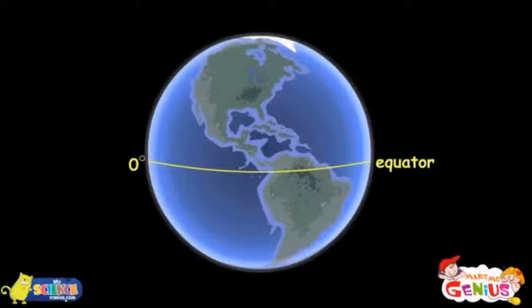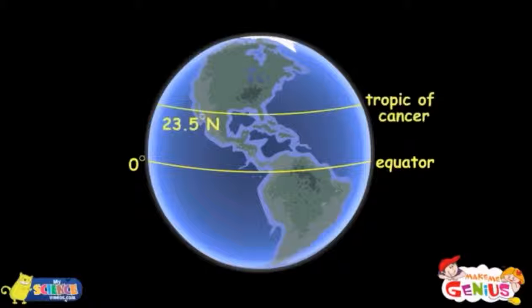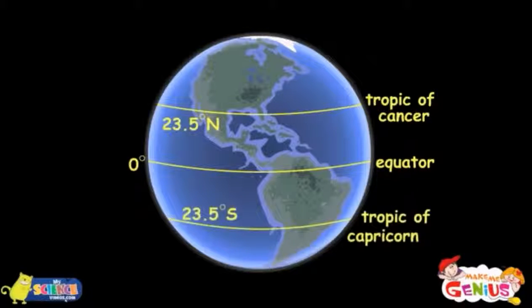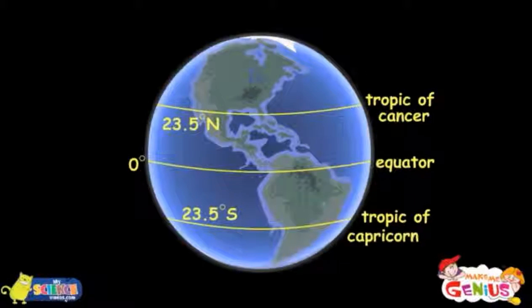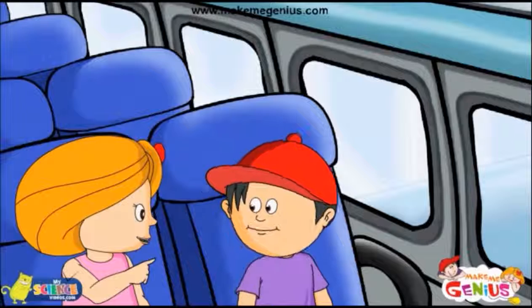The equator lies at 0 degrees, halfway between the north and south pole. There are several other significant lines of latitude: the Tropic of Cancer and Arctic Circle to the north of the equator, and the Tropic of Capricorn and Antarctic Circle to the south of the equator.